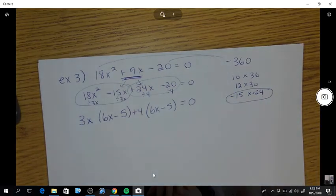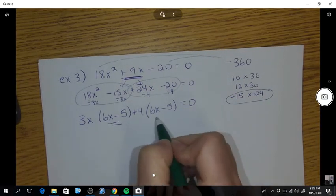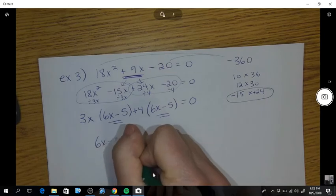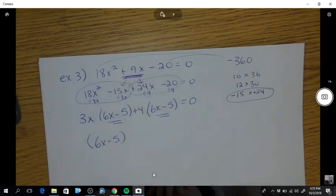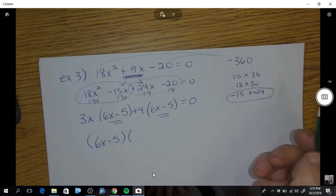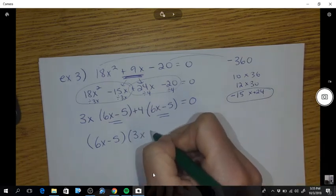So in this process, what you get inside there needs to be the same. So that is one of your factors. And your other factor is your GCFs that you took out. So 3x plus 4.